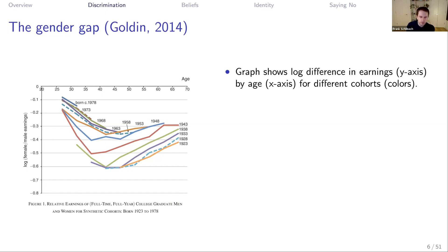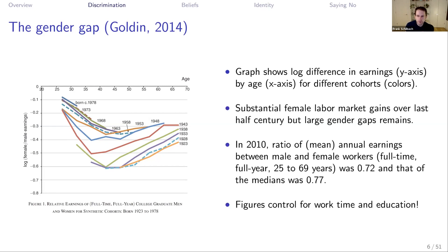We also see a U-shape pattern: the gender gap starts emerging already at around age 27–30 — about 10 to 15% even for the most recent cohorts — and then gets magnified toward 20–40% until about age 40–45, when it plateaus and perhaps falls a bit. So: substantial female labor market gains over the last half-century, but large gender gaps remain. In 2010, the ratio of mean annual earnings for full-time, full-year workers aged 25–69 was 0.72, and the median was 0.77.